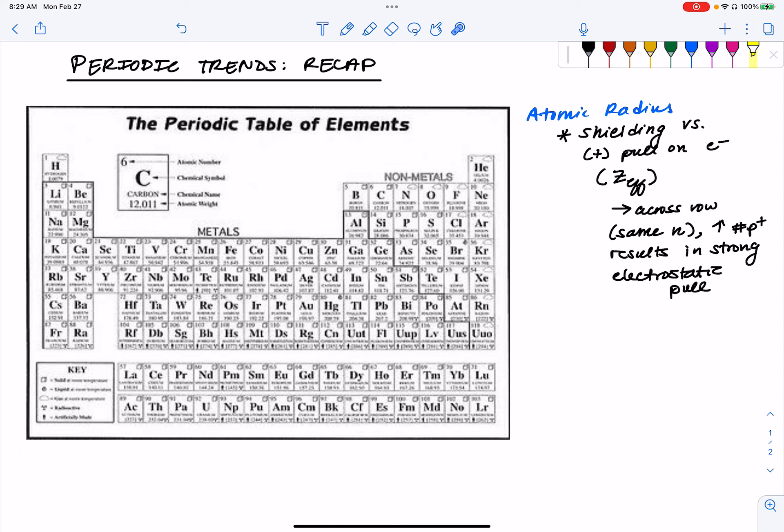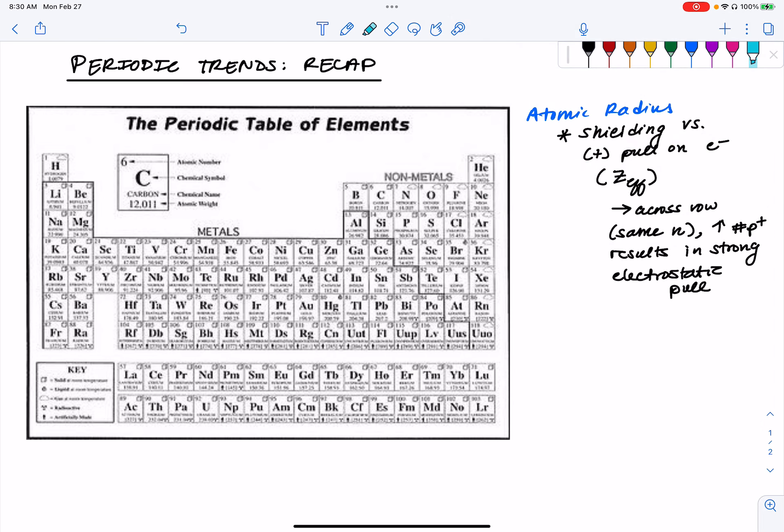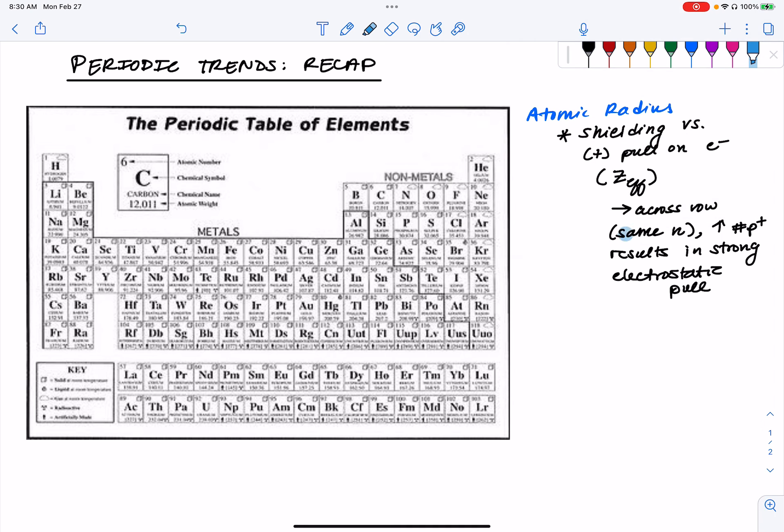So moving across a row, as long as we are in the same energy level or adding electrons to the same energy level, we are looking at a shrinking of our atomic radius because our nuclei are pulling so strongly on those valence electrons.